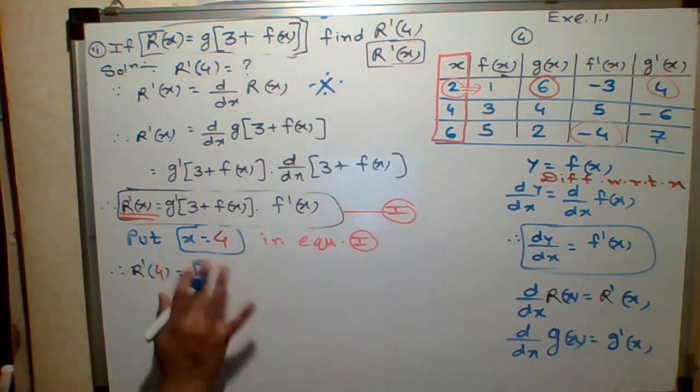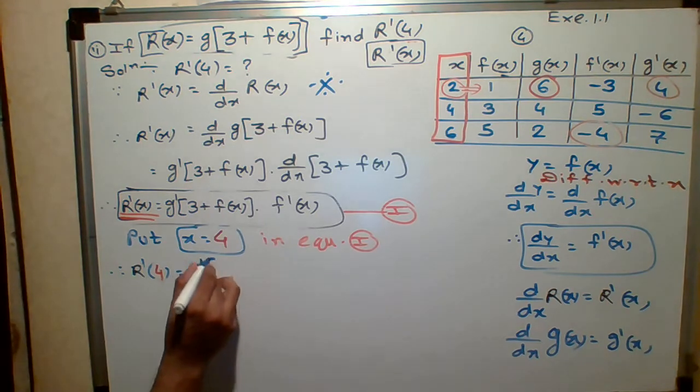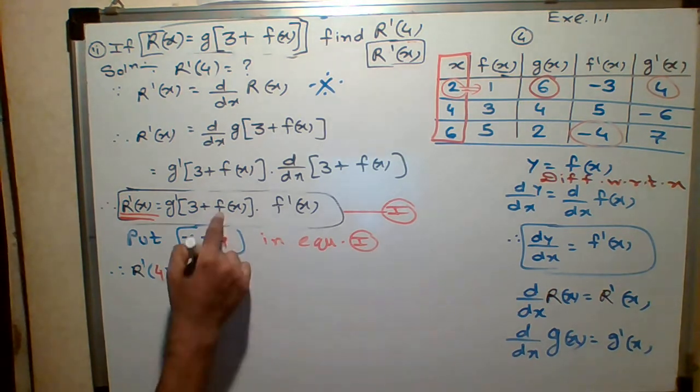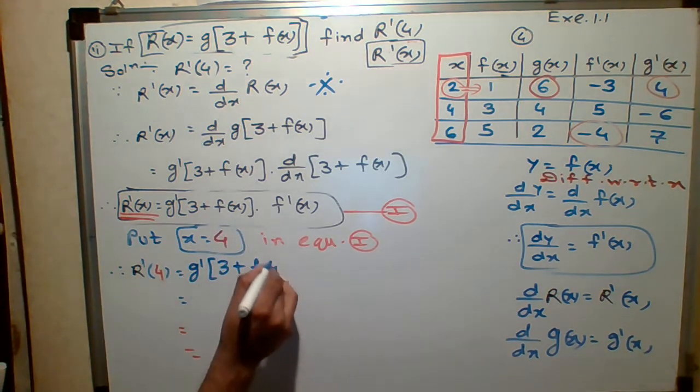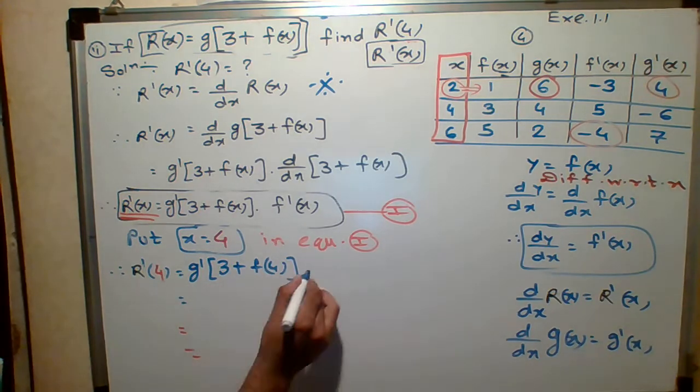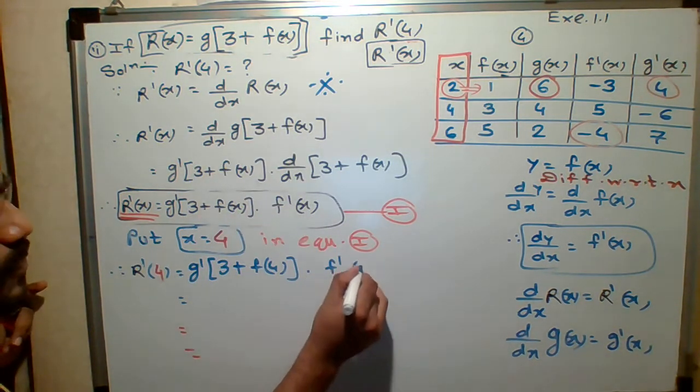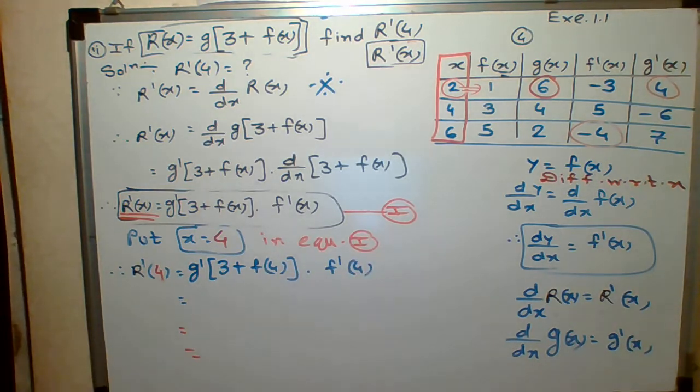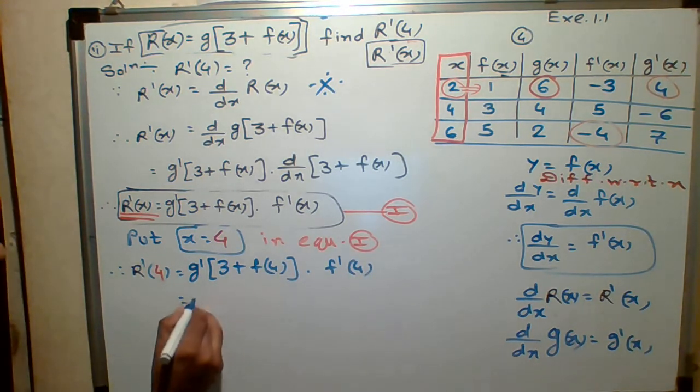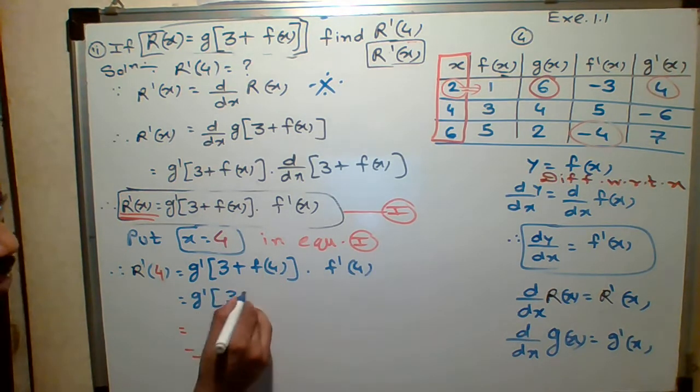See over. G dash, 3 plus F of what? 4. Don't think first. Put the values. F dash of what? 4. Put it step by step. This will come after because the bracket is in the middle. Once there is 100, we can push it.